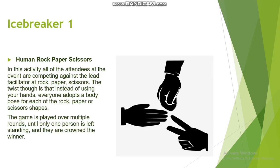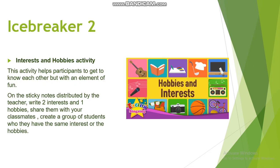We have two ice breakers. The first is Human Rock, Paper, Scissors, where we are going to play rock, paper, scissors. The twist is that instead of using your hands, everyone adopts a body pose for each of the rock, paper, or scissors shapes. The game is played over multiple rounds until one person is left standing and they are crowned the winner.